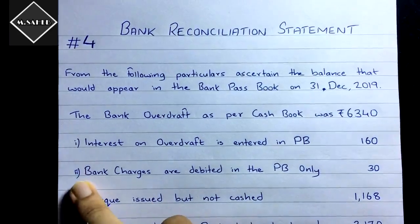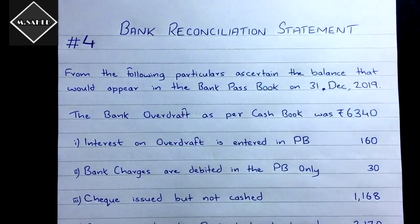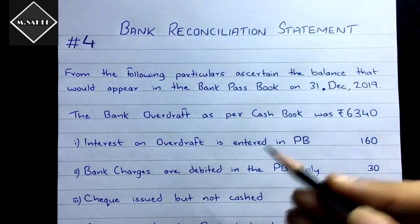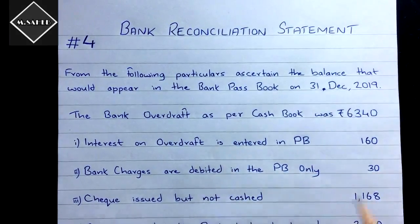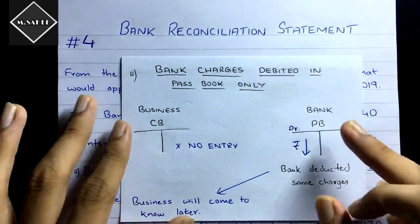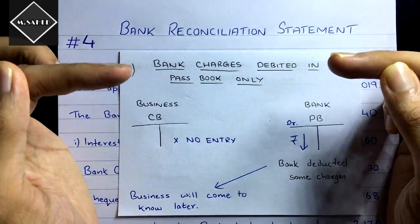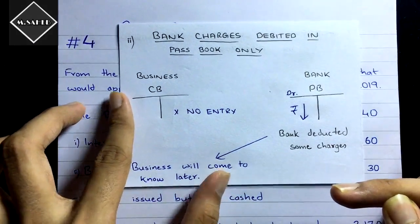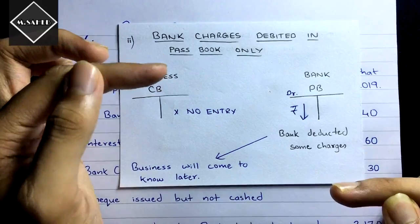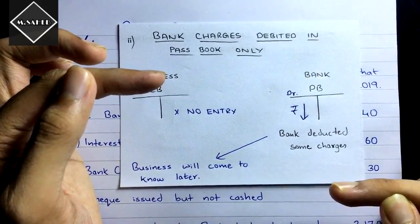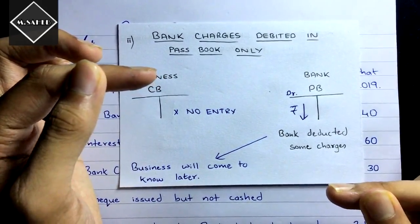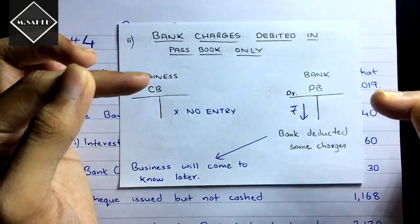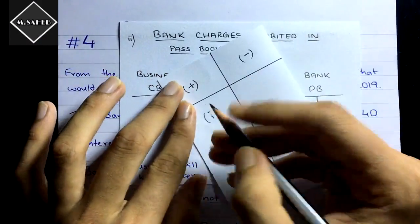The second transaction: bank charges are debited in the passbook only. Bank charges mean a deduction of money — debited in the passbook means the bank balance decreased according to the passbook. The business accountant doesn't know about these charges, so no entry was made in the cash book. To do the match-up, we can only move the passbook finger, so we increase the passbook to match it with the cash book. This transaction will also be added.